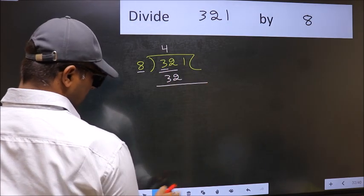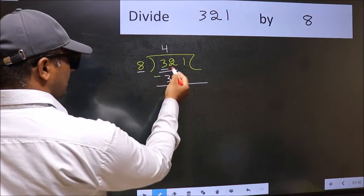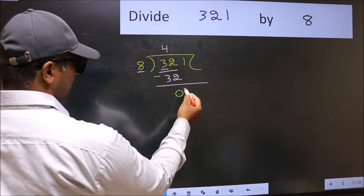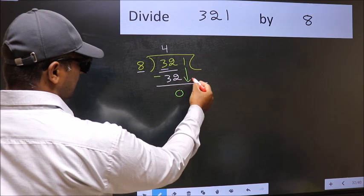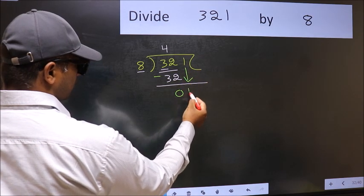Now we should subtract. 32 minus 32, 0. After this, bring down the beside number. So, 1 down.